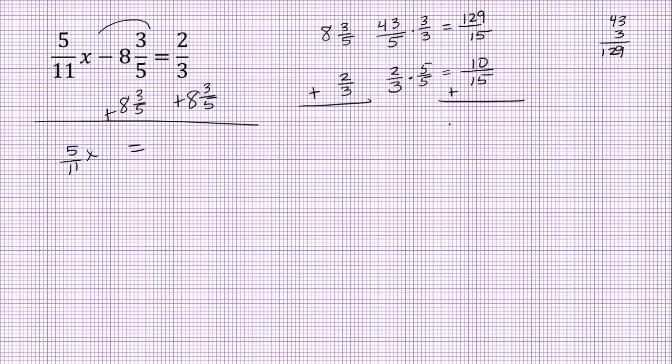So if we add all of that, we get 139 fifteenths. Now going back to our problem over here, I have 139 fifteenths. The improper fraction is going to be helpful in the next step as well.